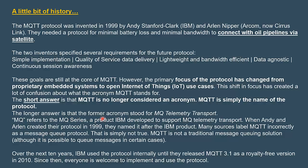The longer answer is that the former acronym stood for 'MQ Telemetry Transport.' MQTT referred to the MQ series, a product IBM developed to support MQ Telemetry Transport. When Andy and Arlen created the protocol in 1999, the name came from the IBM product. Many sources label MQTT incorrectly as a message queue protocol — that is simply not true. MQTT is not a traditional message queue solution, although it is possible to queue messages in certain cases. Over the next 10 years IBM used the protocol internally until they released MQTT version 3.1 as a royalty-free version in 2010. Since then everyone is welcome to implement and use the protocol. Now MQTT is an open source protocol used in a wide variety of applications in the Internet of Things domain.